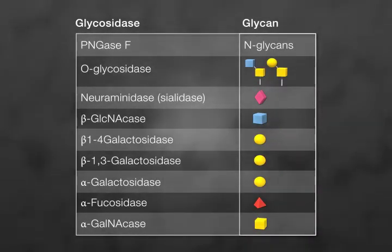Additional exoglycosidases, for instance, beta-1,3-galactosidase, alpha-galactosidase, and fucosidase can be used along with the protein deglycosylation mix.